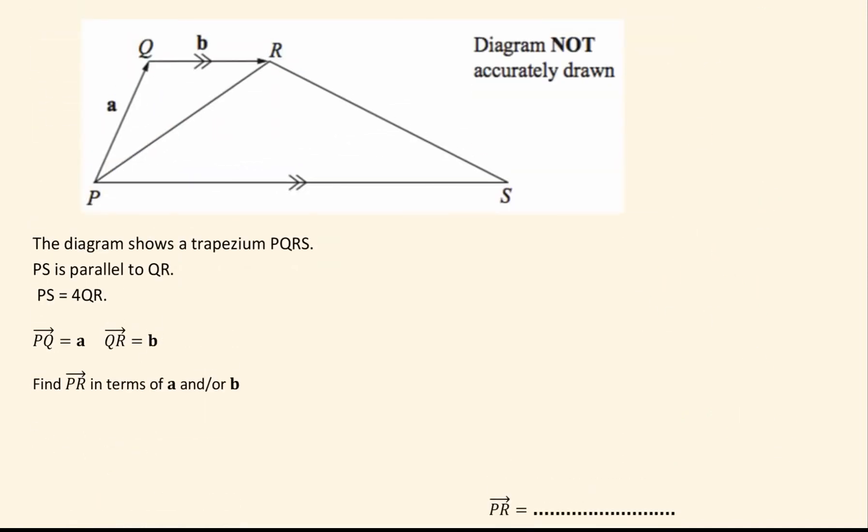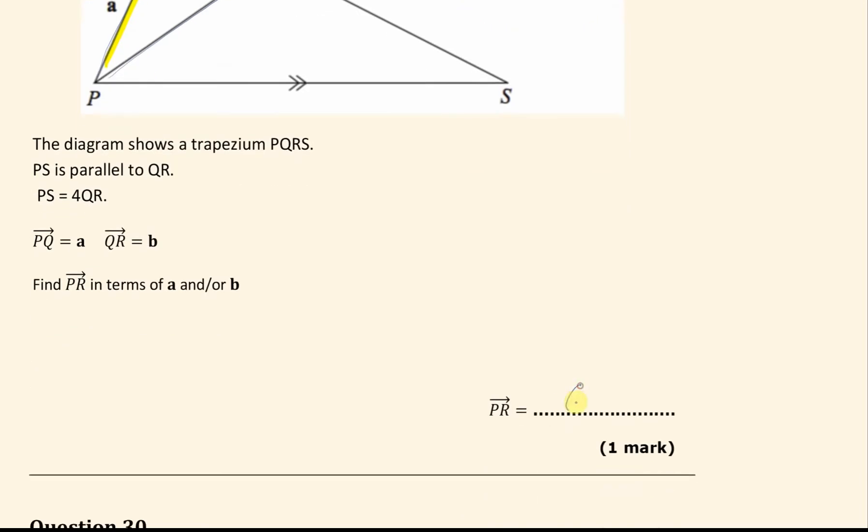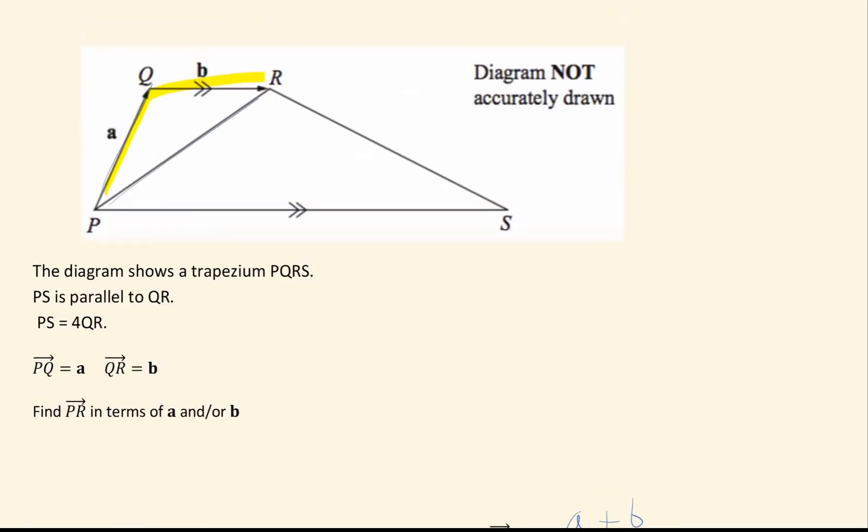Next question, we want the vector from P to R, this one's quite nice, we just go here, we just go here and then here, so it is going to be just a plus b. Again, here this arrow wasn't given, but we are told that P to Q is a, which meant the arrow should have gone that way.